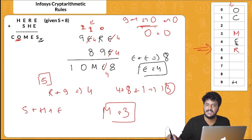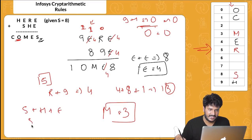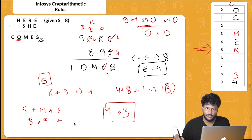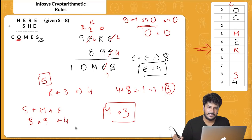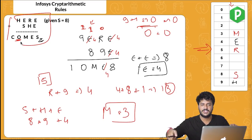All values found: C=1, O=0, M=3, E=4, R=5, S=8, H=9. If they ask for S plus H plus E, that is 8 plus 9 plus 4 equals 21. The question is now completely solved.